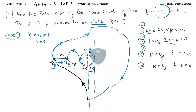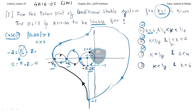For the first condition, if 0.2k is greater than 1, then k is greater than 5. Checking stability: encirclement clockwise about minus 1 gives N = minus 2. Using the formula N = P minus Z, with P not mentioned we take P = 0, so Z = 2. For a stable system Z must equal 0, so this is an unstable range.